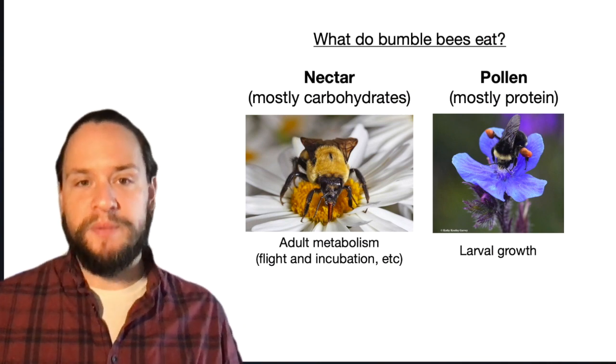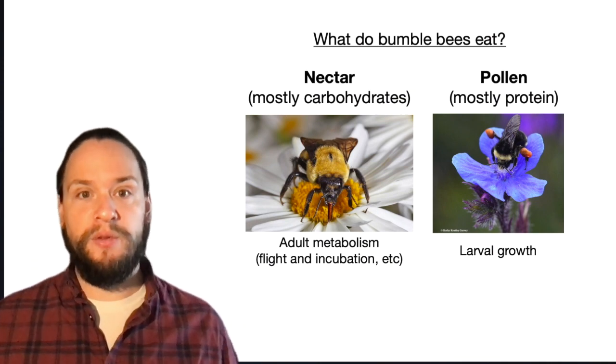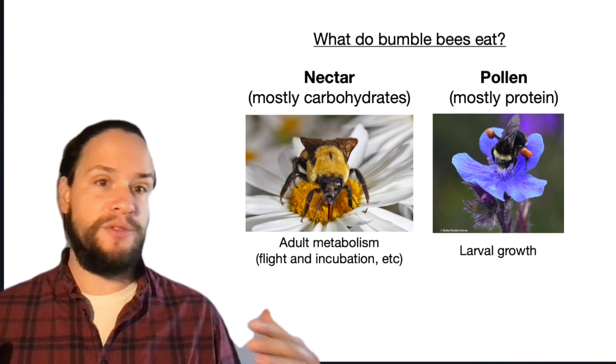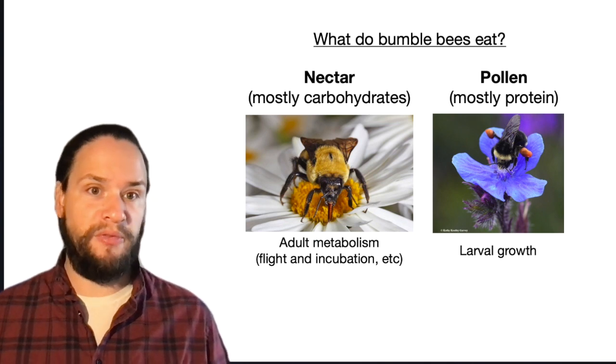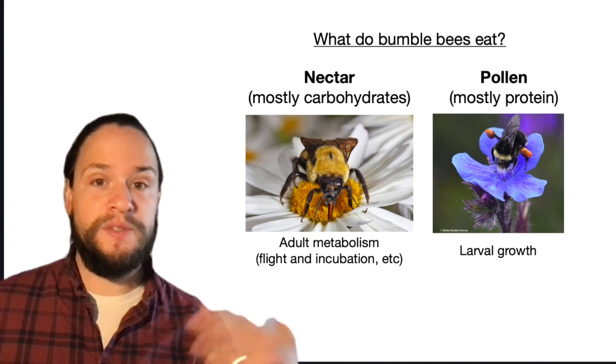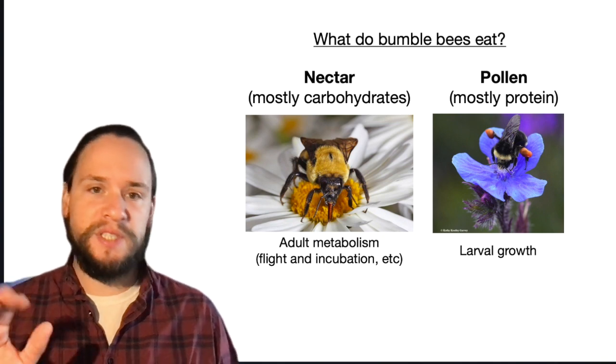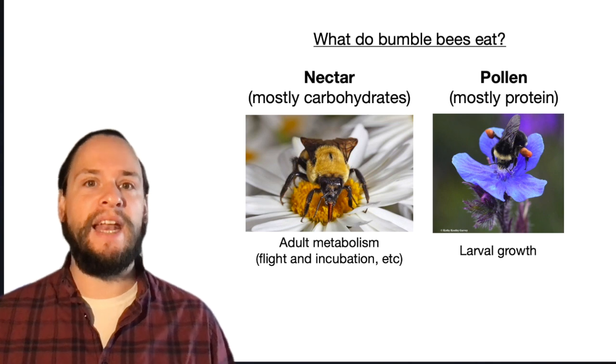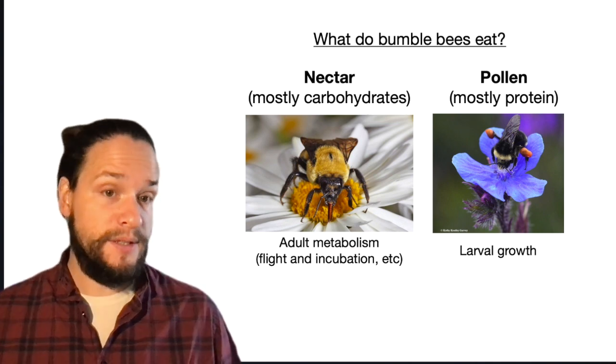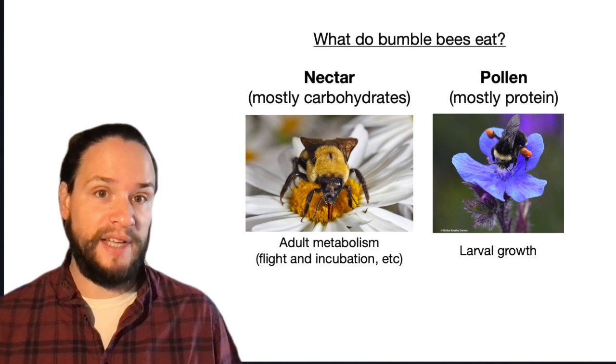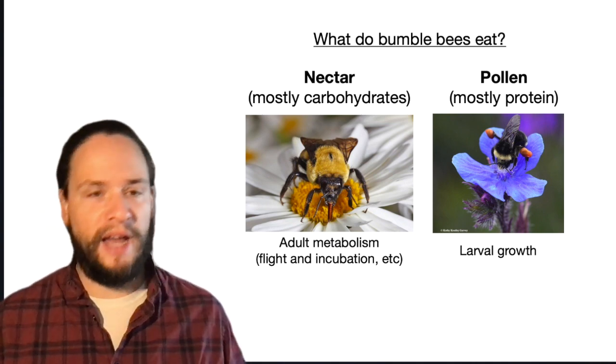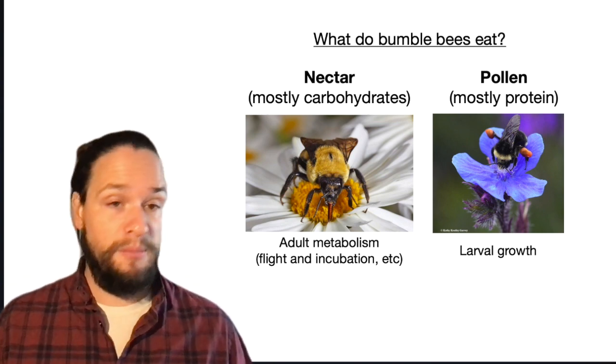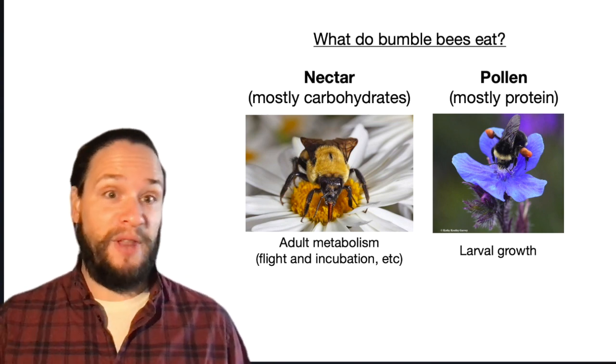And all of that adaptation to moving through and flying through the environment is really aimed at a pretty simple thing. And that is getting as much food as fast as possible from the environment to fuel themselves and to fuel colony growth. So in particular, what bumblebees and all bees, for the most part, are getting from flowers are two things. Nectar. Nectar primarily provides carbohydrates, which we not exclusively but mostly think fuels adult metabolism. So being a bumblebee is costly. Flying is hard.